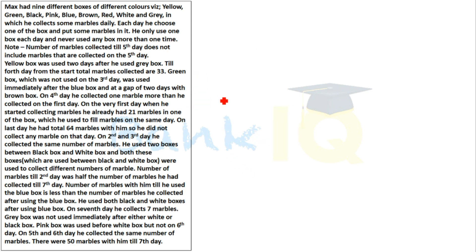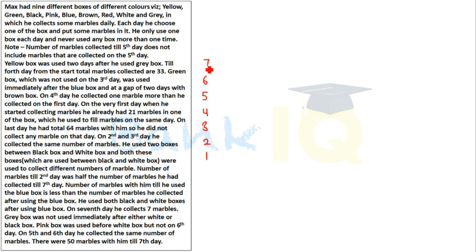Now let me set up the framework. Since there are 9 days total, I am numbering them here: 1, 2, 3, 4, 5, 6, 7, 8, 9. Now let's write down the conditions.